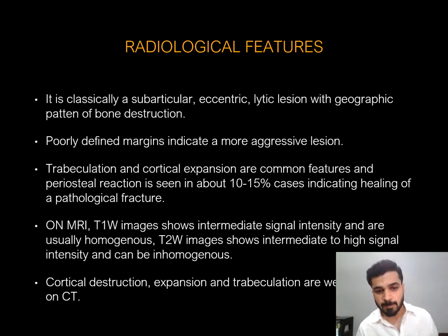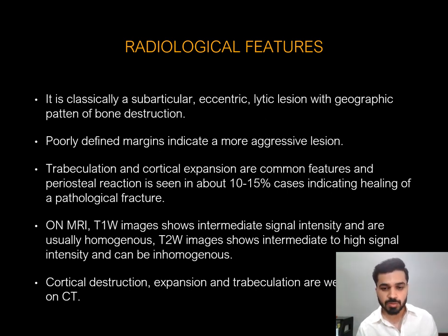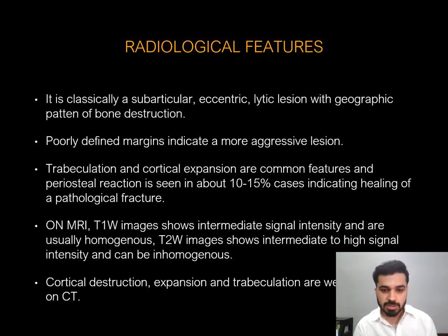On MRI, T1-weighted images show intermediate signal intensity and are usually homogenous. T2-weighted images show intermediate to high signal intensity and can be inhomogenous. Cortical destruction, expansion, and trabeculations are well appreciated on CT.